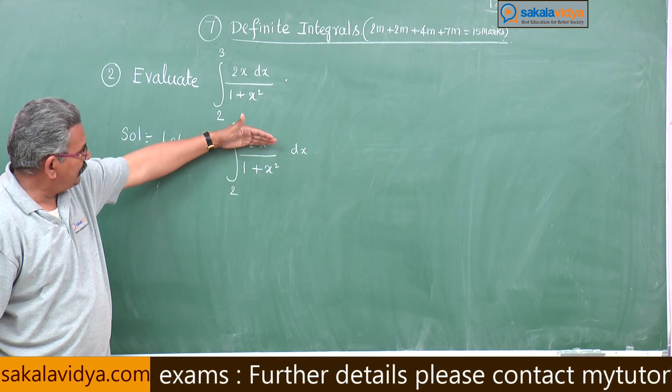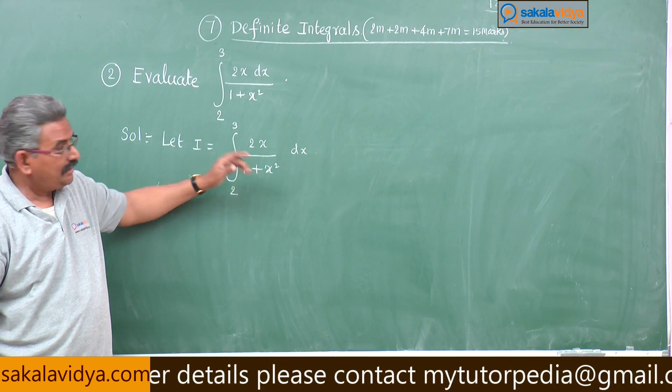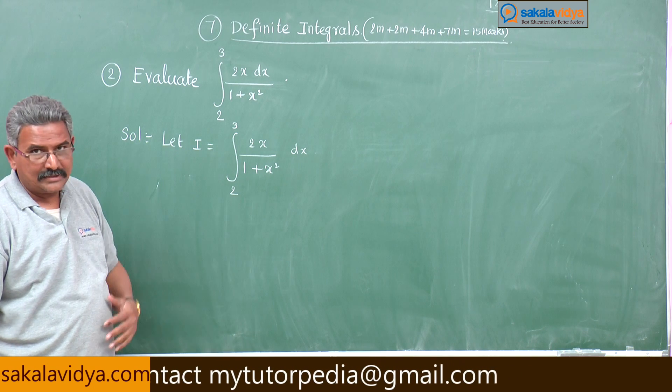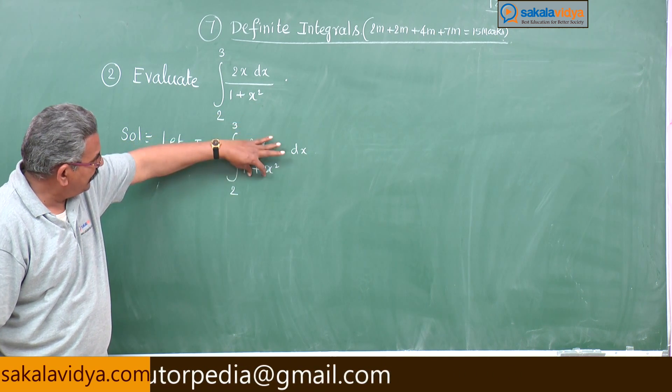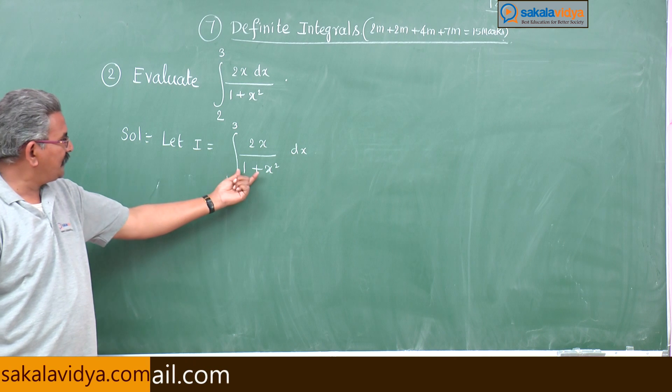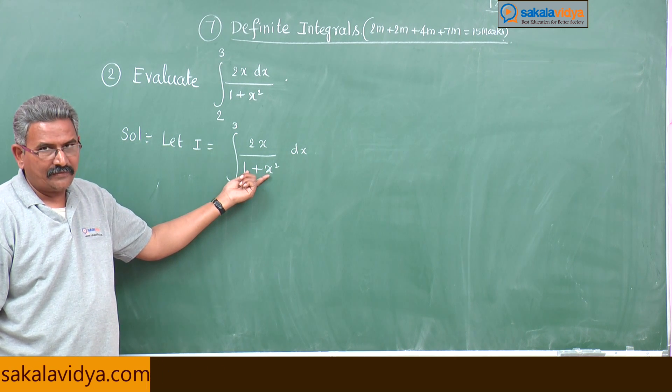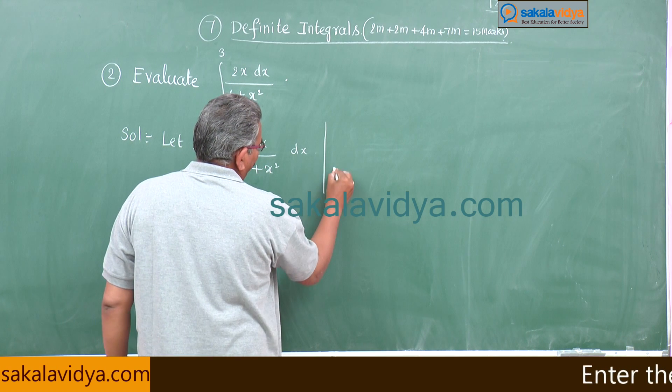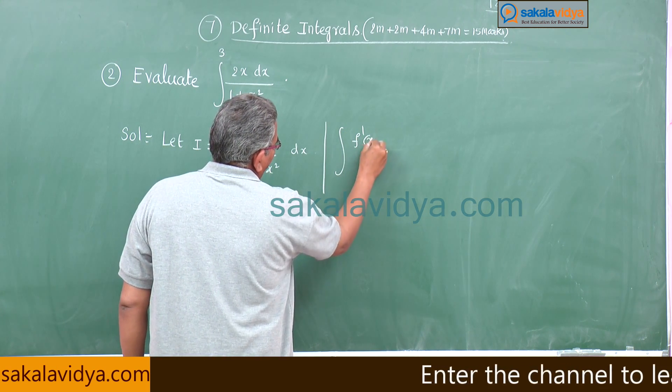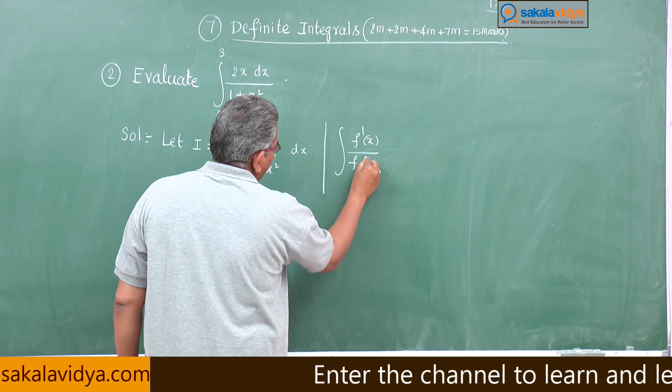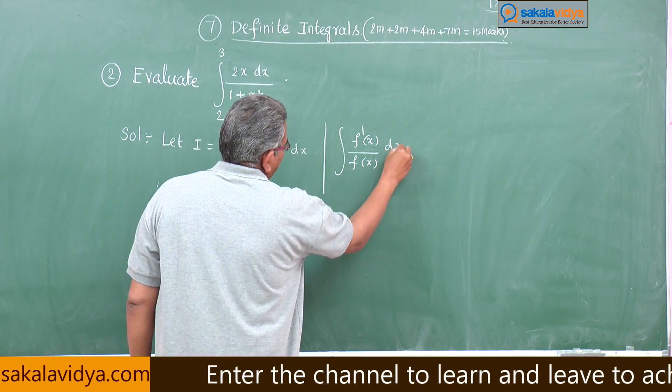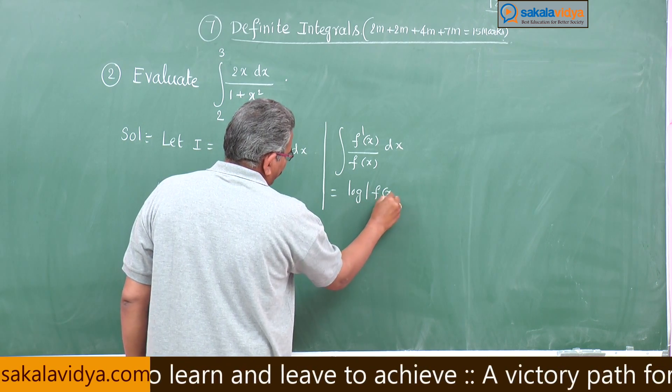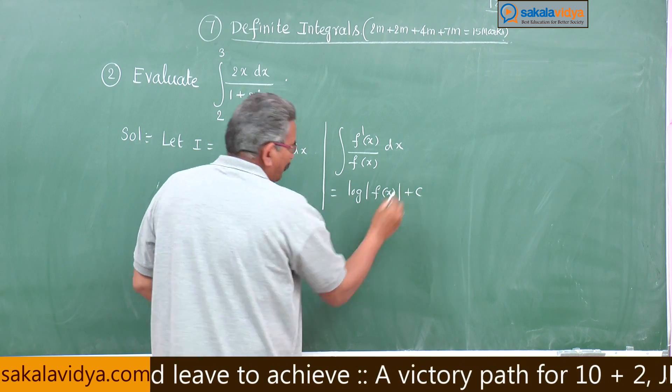Now what do you observe? This is numerator, this is denominator. If you just observe carefully, we say that 2x is the derivative of 1 plus x square. Suppose if you say 1 plus x square is equal to f of x, this is f dash x. From indefinite integral we have one formula: f dash x by f of x dx, this is equal to log mod f of x plus constant of integration. Am I correct? You might have recollected.